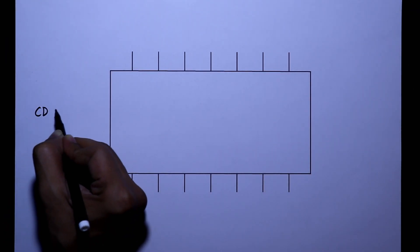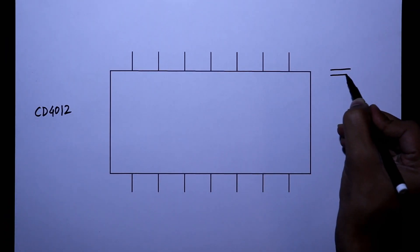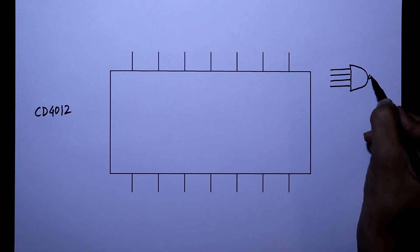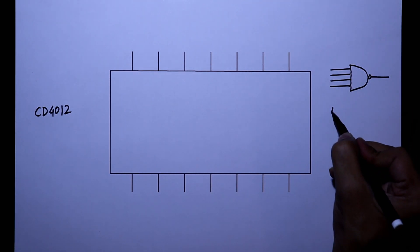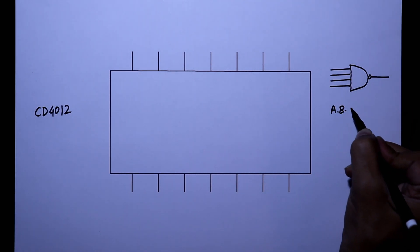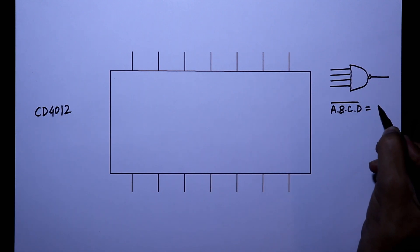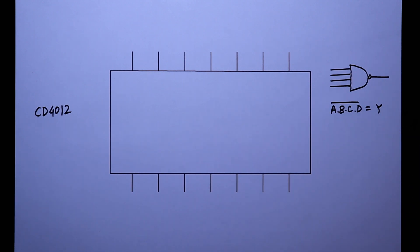Here, this is the IC CD4012. It is a 4-input NAND gate. The equation is A dot B dot C dot D whole bar equals Y. So when all the inputs are 1, then we will get 0 as our output.